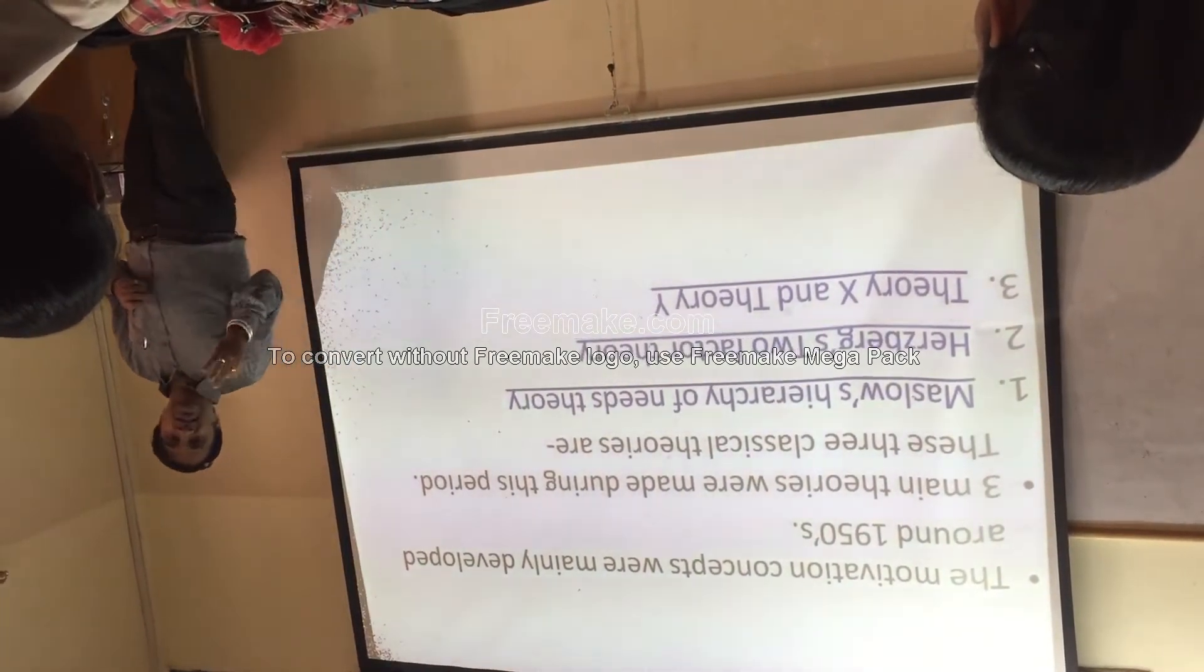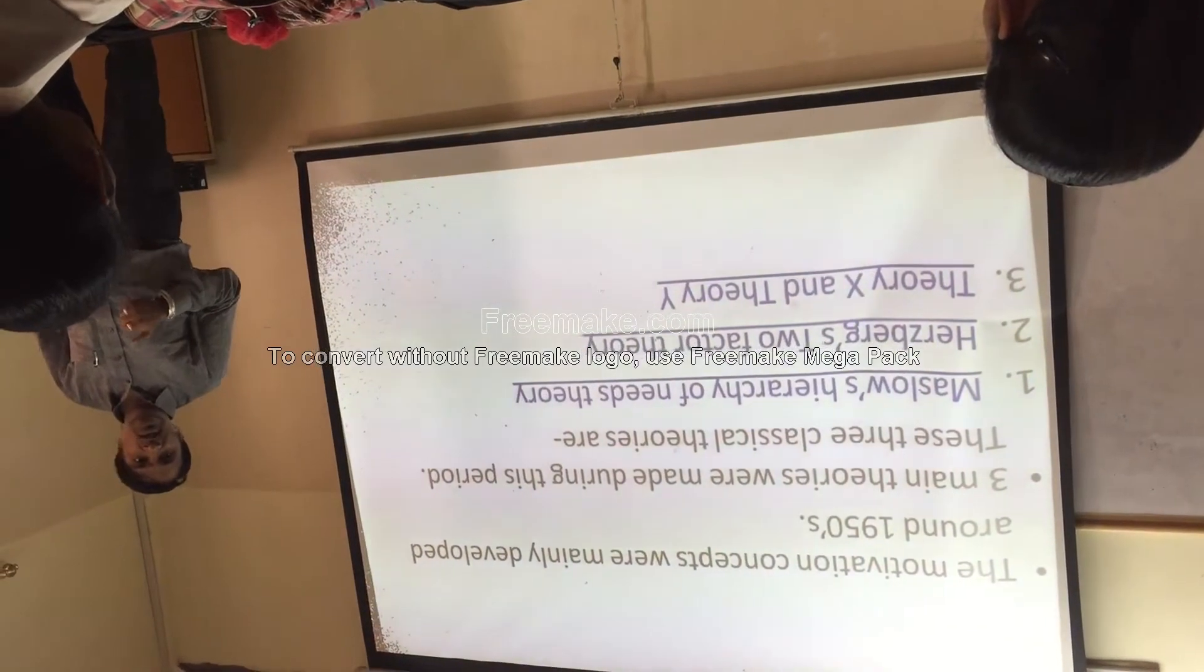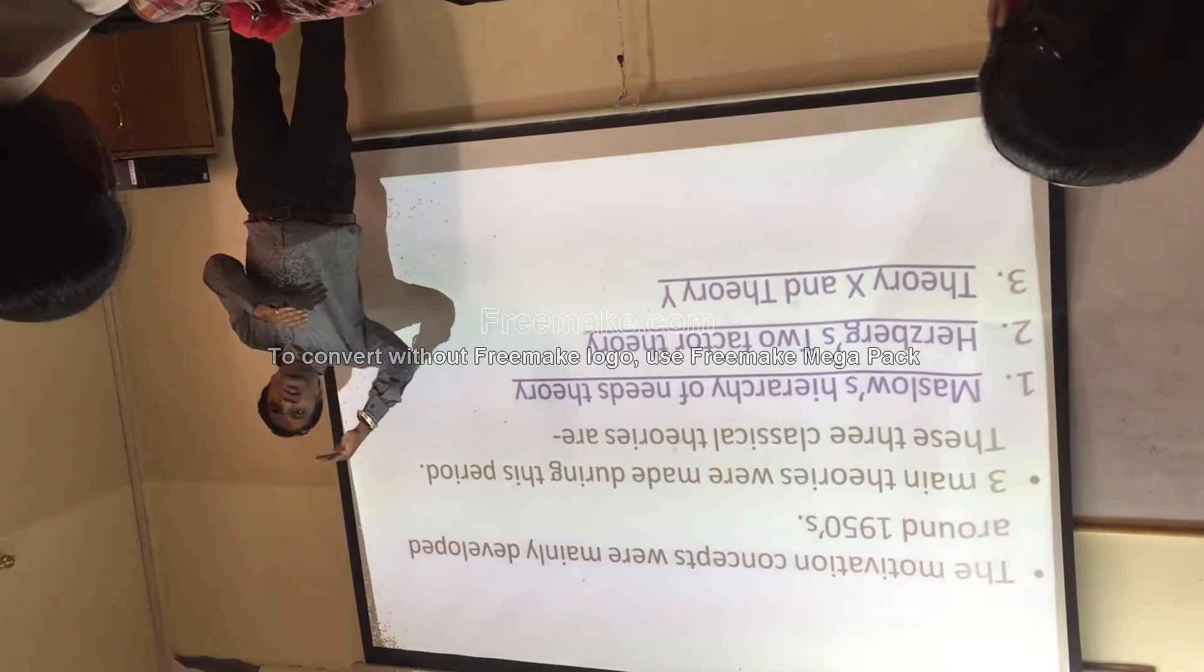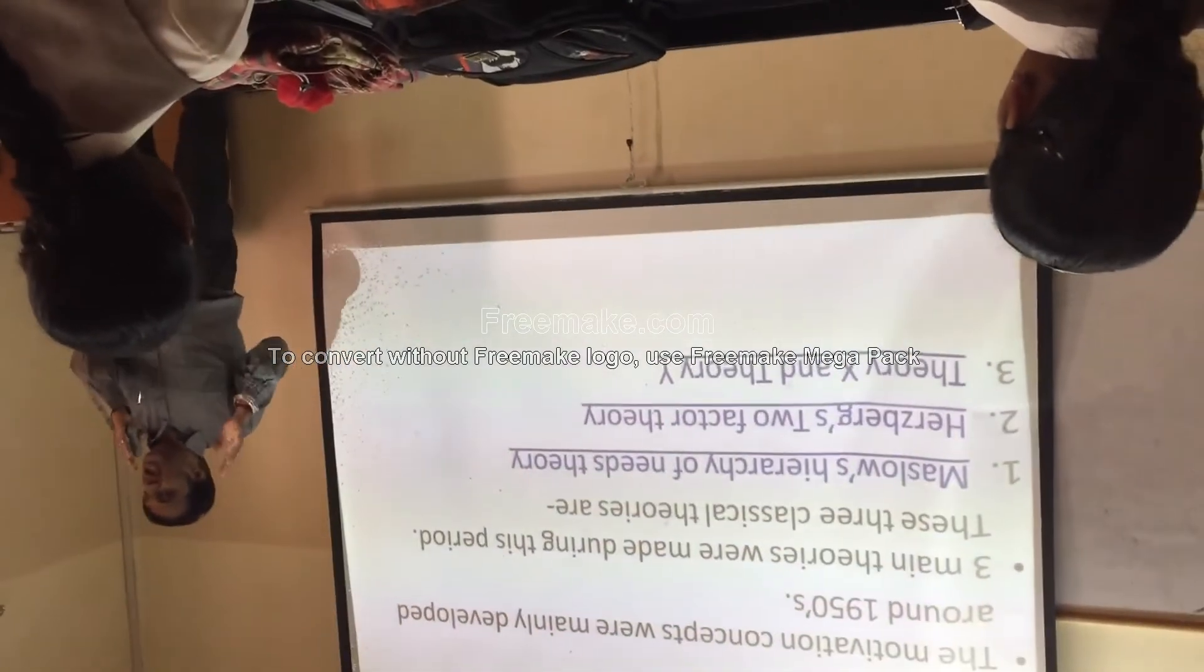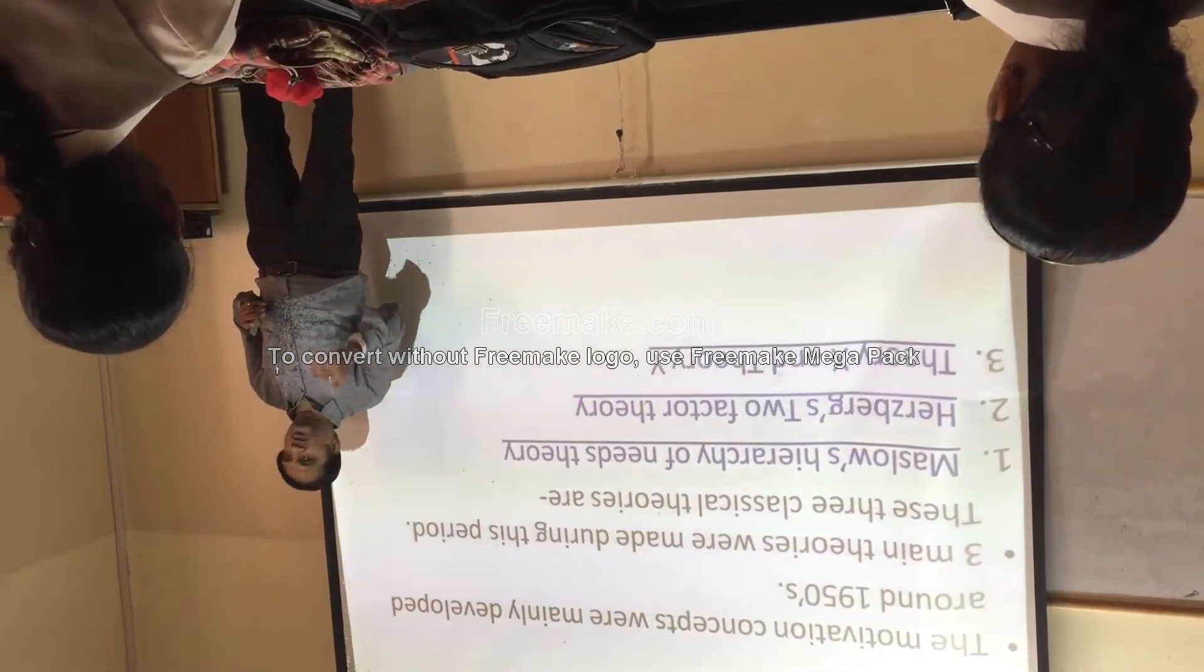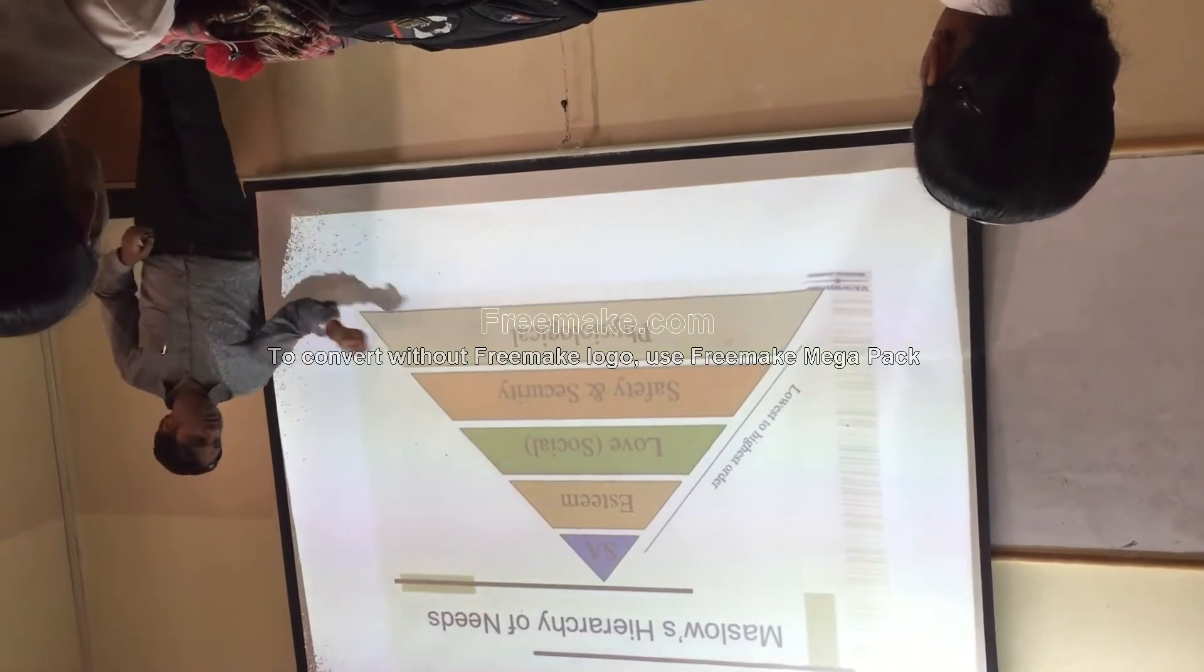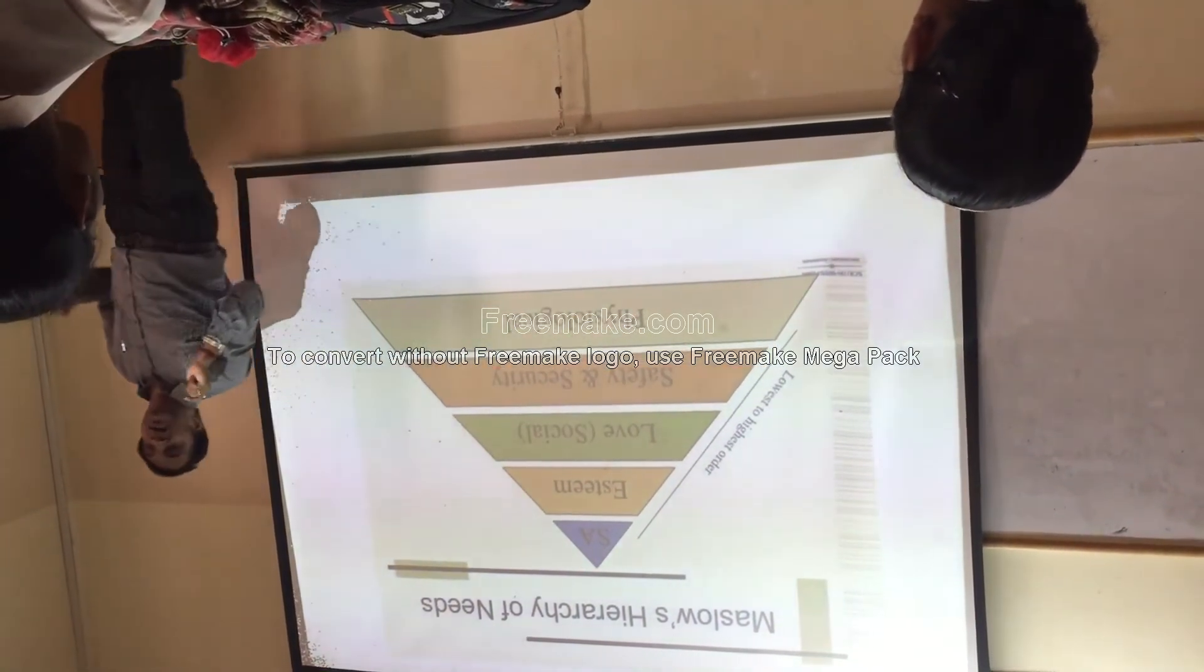Out of the three theories, yesterday we discussed something on Maslow's hierarchy theory. Starting from psychological effect to self-actualization, every human being will undergo one or the other steps. And mind you, every step doesn't define an exact number of years. You may be around 35 years or you may be around 65 years. This particular hierarchy may be driven by an external force and which we taught at length yesterday.